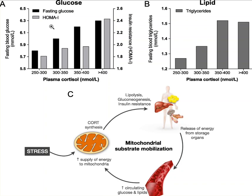These graphs track fasting glucose and HOMA-I, which is an insulin resistance marker used for type 2 diabetes diagnosis and monitoring. We can see that as plasma cortisol goes up, insulin resistance goes up. As plasma cortisol goes up, fasting glucose goes up. And on the right, we can see that as cortisol goes up, we see more triglycerides in the bloodstream.